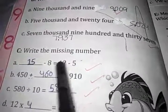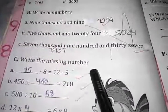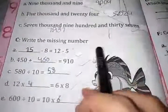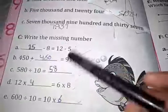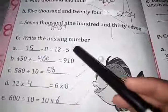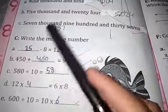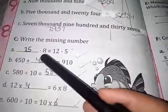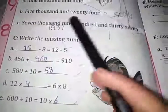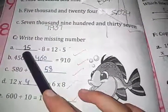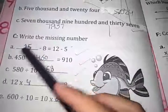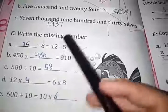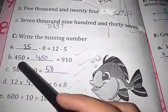Question number C: write the missing numbers. In this question we have to fill in the blanks — fill in the gaps. First, find the number from which eight will be subtracted and the answer will be seven.